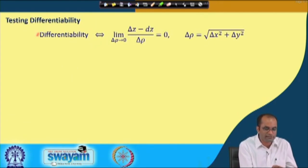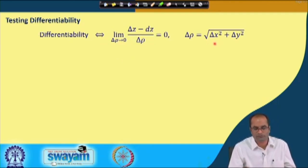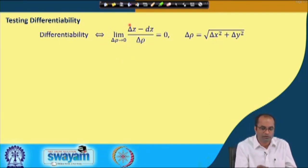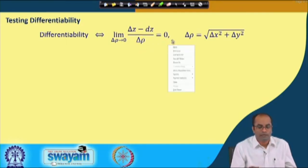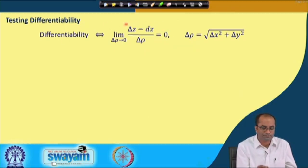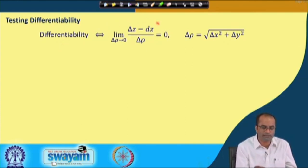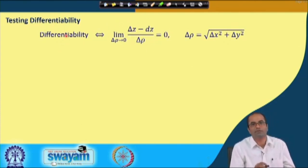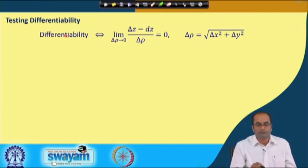The limit test states that differentiability is equivalent to showing that the limit of (delta z − dz) / delta rho equals 0, where delta rho = sqrt(delta x² + delta y²). Both directions hold: if f is differentiable, this limit must be 0, and if this limit equals 0, then f is differentiable. So they are equivalent definitions for testing differentiability.